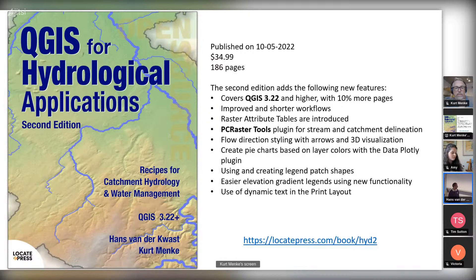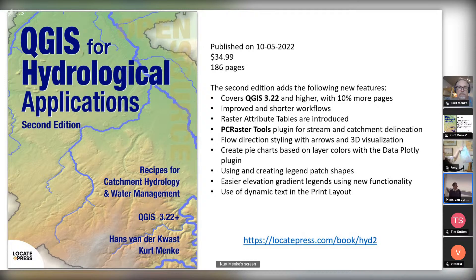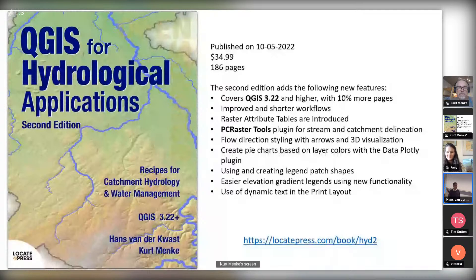A really nice feature that makes workflows much easier is using dynamic text in the print layout, where you can simply add the current date without writing expressions for that. There's a link to the book on the Locate Press website. What's also important to mention is that if you purchase the book, part of the income goes to a fund to support IHE Delta students from the Global South — preferably female — to join FOSS4G and QGIS events, and we already have a few of those alumni.